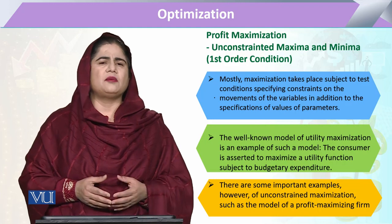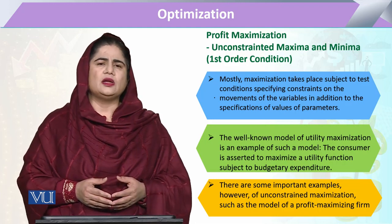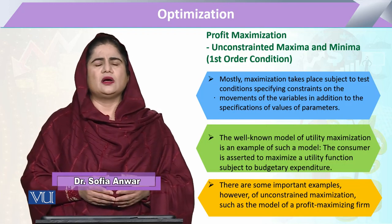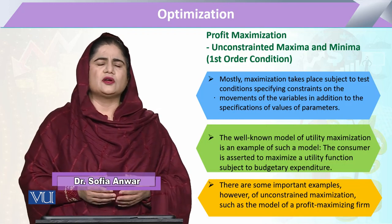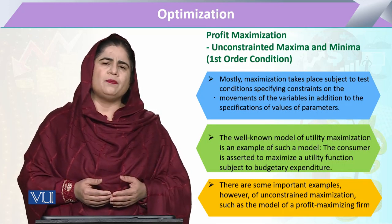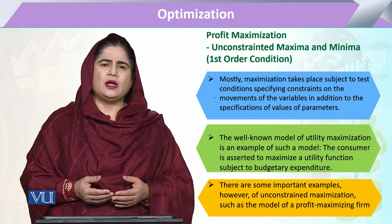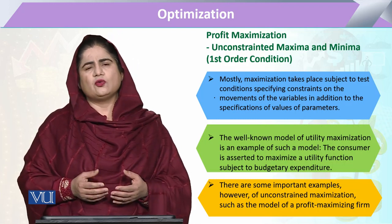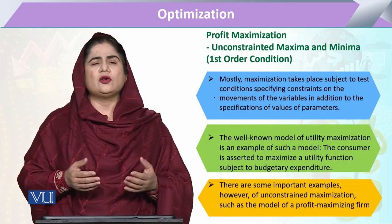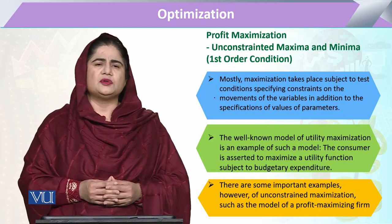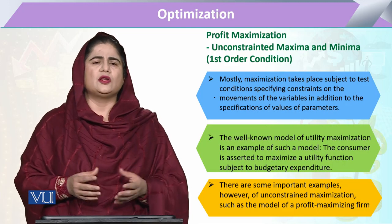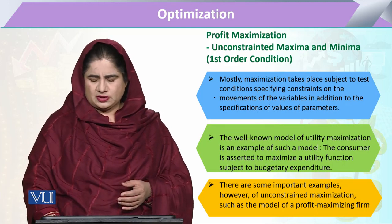A simple example is when we take various aspects of utility maximization, where we take the budget line of the consumer as the constraint. The consumer maximizes utility subject to the given budget. But in this case, we are going to take the example of profit, where we are not going to take any constraint. Certain aspects can be optimized without any constraint — and this is profit maximization.